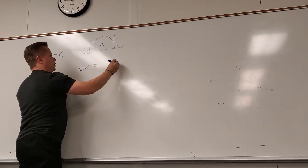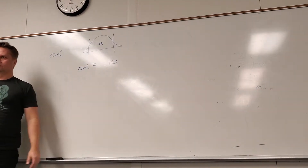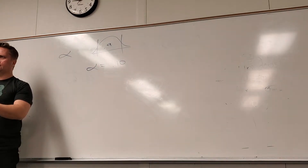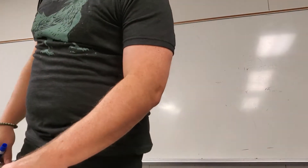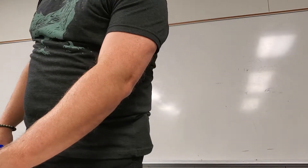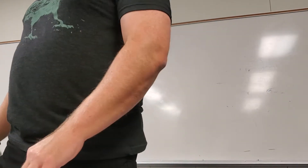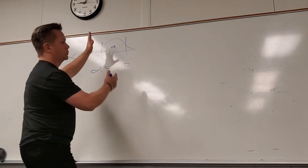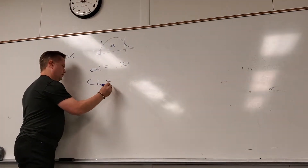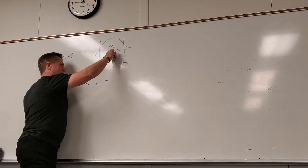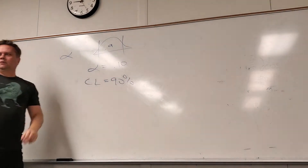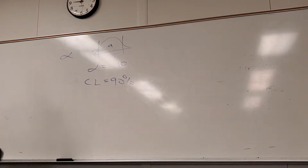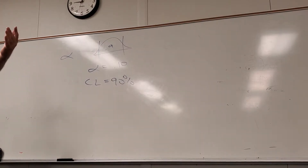Alpha would be 0.10. That's part of that question, because part C on 130 wants you to identify the confidence level and the alpha. So what would the confidence level be? 90%. So that's how those two kind of relate: alpha is the area in the tail, so confidence level is the area inside.